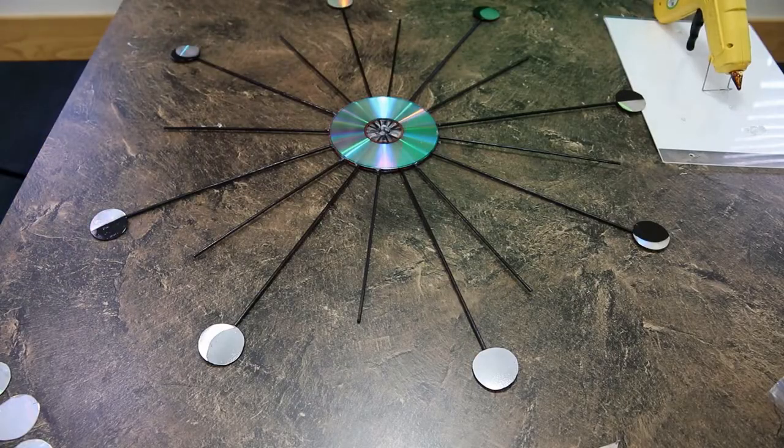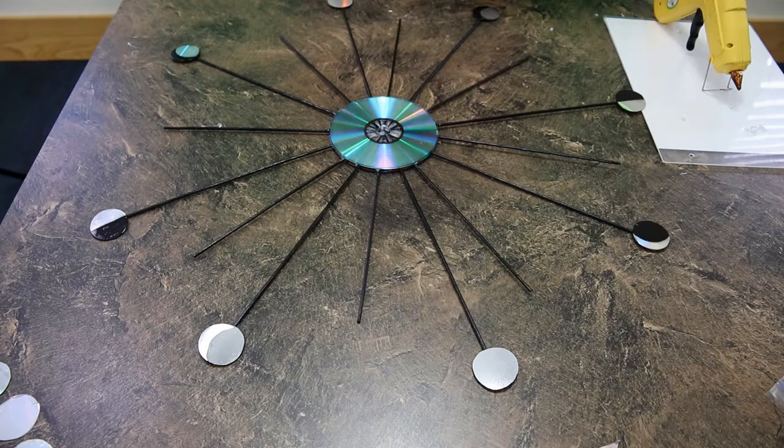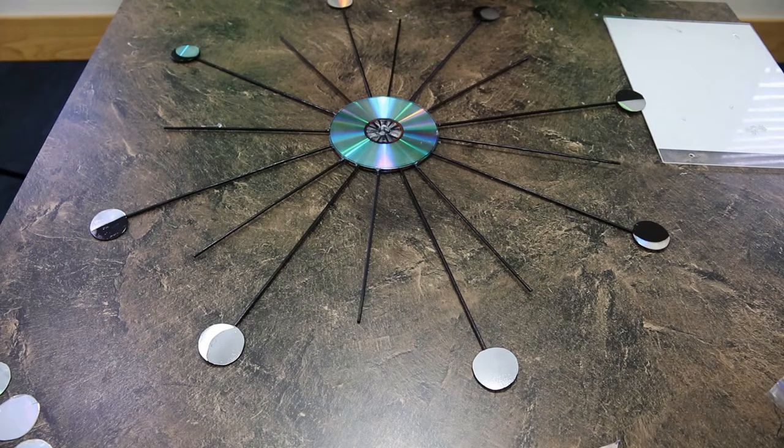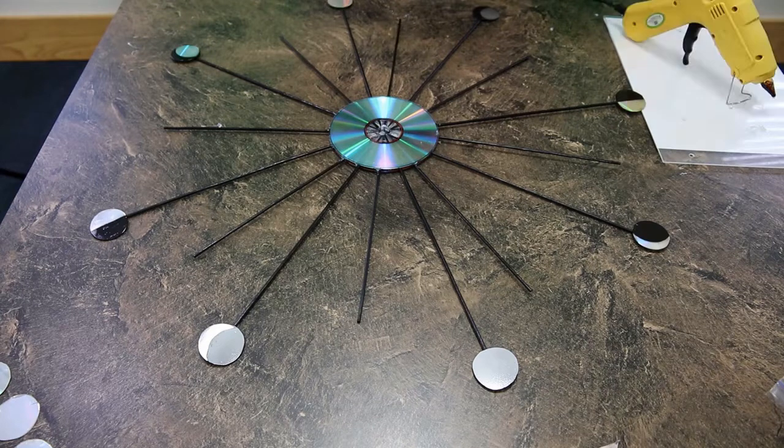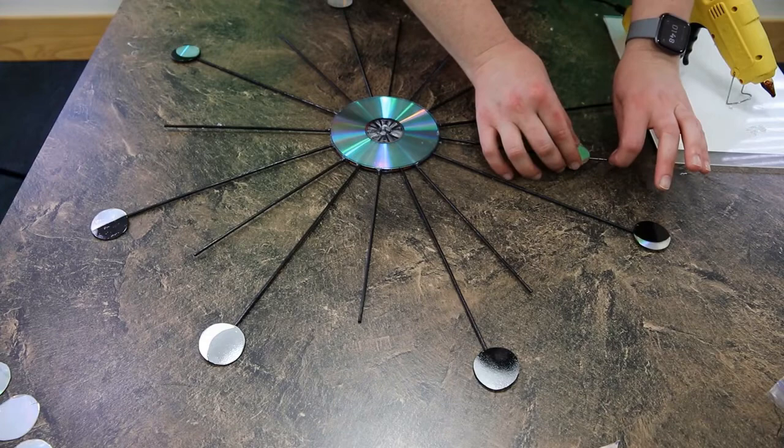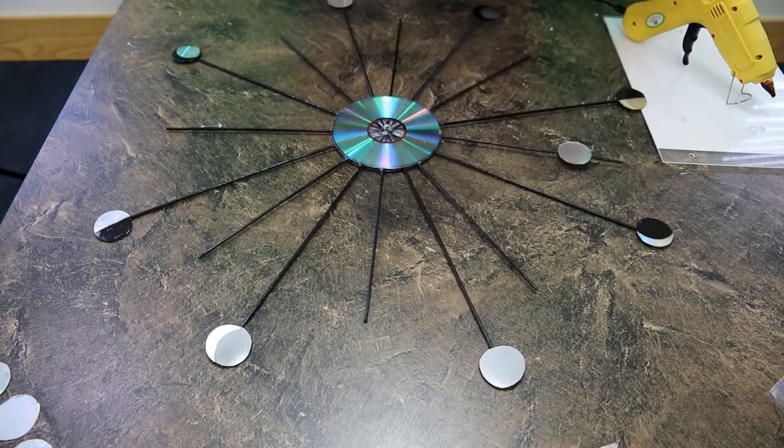So now that we have our moon phases onto our wall art, we are going to start working on putting on the other discs. Now for these, I'm going to go down probably about two fingers on each one and just kind of put them in a little bit different spot.